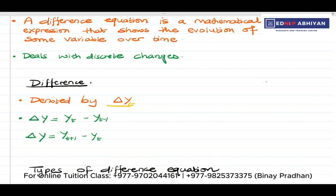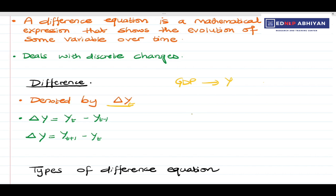For example, suppose we are talking about GDP. We are going to compare a country's GDP. So we have variable y. In 2023, the country's GDP was 10 million. In 2024, the country's GDP was maybe 15 million.